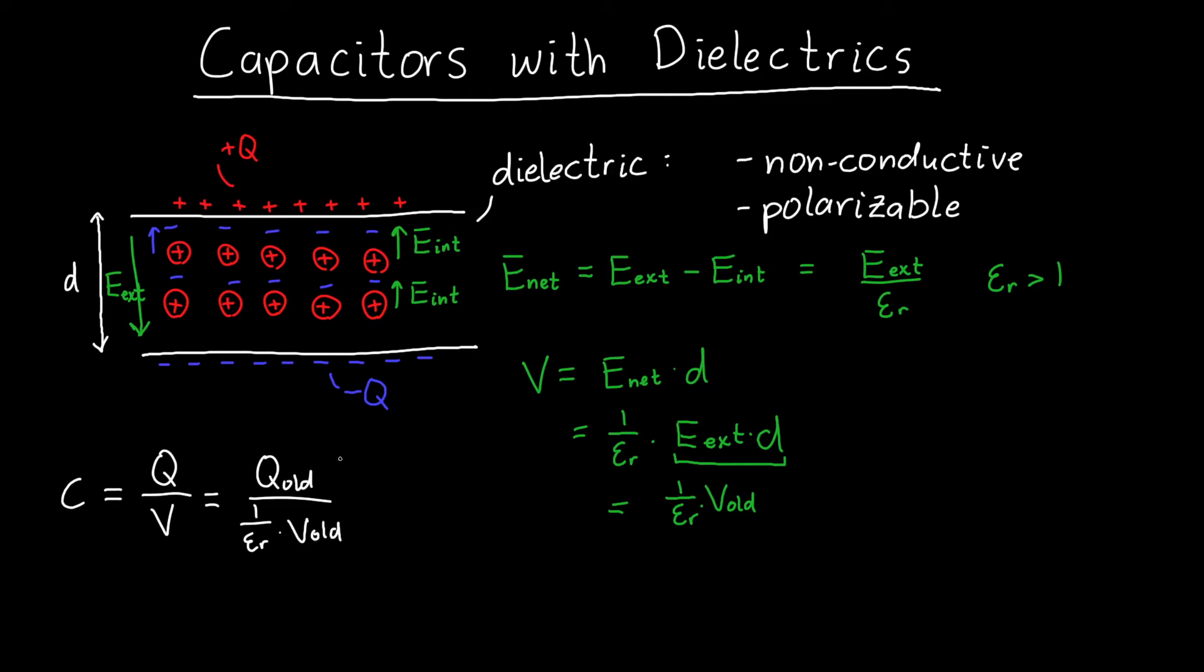And Q old over V old, this is just my old capacitance. And so my new capacitance is epsilon r times my old capacitance. This is my new capacitance. And so by inserting a material between these two plates, I reduced the electric field inside and I increased the overall capacitance.